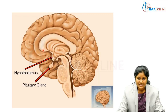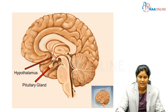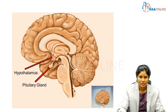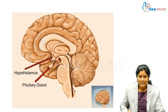This is the sagittal section of the brain showing the hypothalamus structure. You can see the hypothalamus situated here; just above is the anterior commissure. You can see the fornix and the corpus callosum lying above. This is the pituitary gland, and this area is the hypothalamus. It extends from just above the optic chiasm to behind where the mammillary bodies are located.